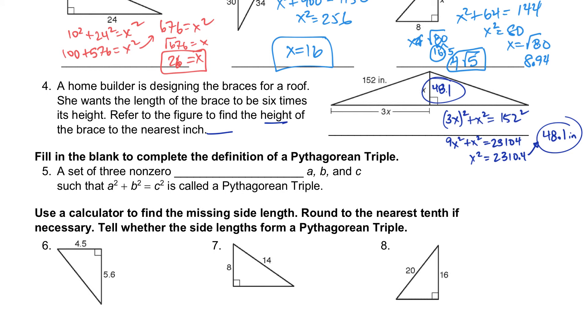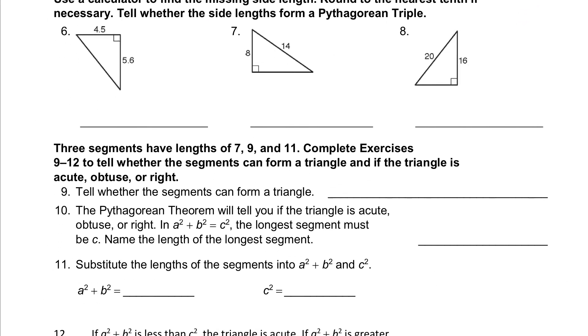It says on the next problem, fill in the blank to complete the definition. A set of three non-zero A, B, and C such that... So this would be integers. Non-zero integers would give me a Pythagorean triple.